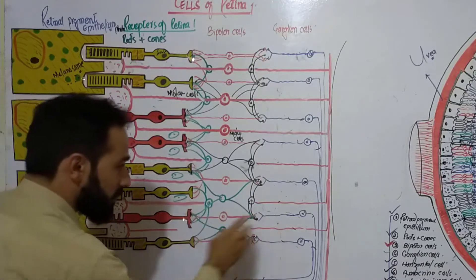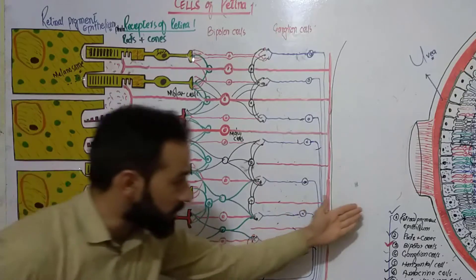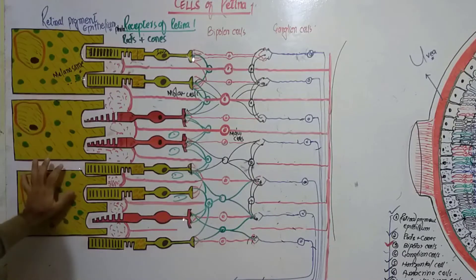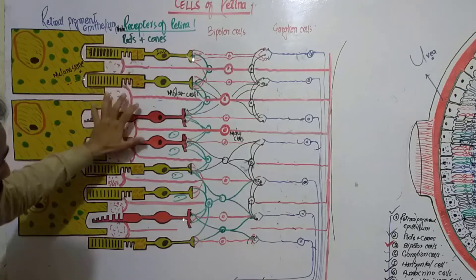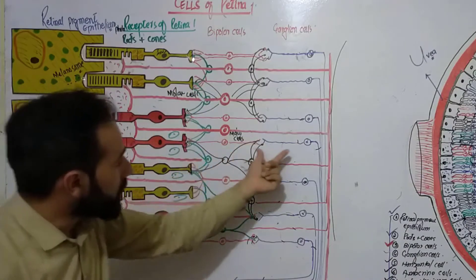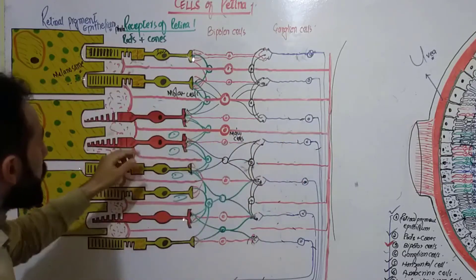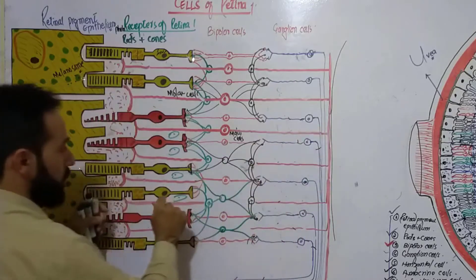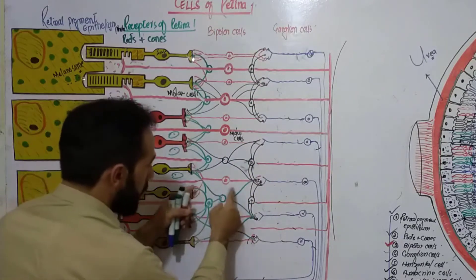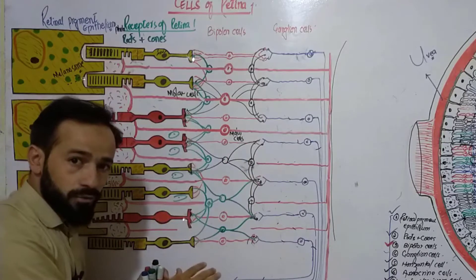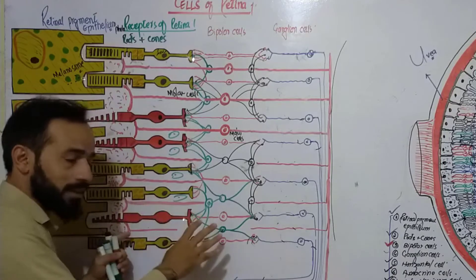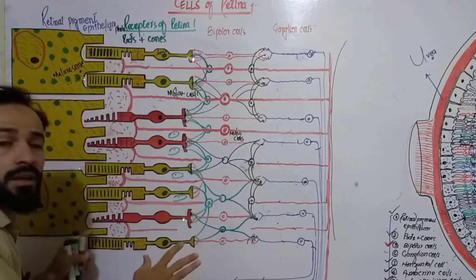As I told you in the previous lecture, we discussed about cells — how many types of cells are present. There are 10 types of cells found in the retina: the retinal pigment epithelium, rods and cones, bipolar cells, ganglion cells, Müller cells, horizontal cells, amacrine cells, and interplexiform cells. If you haven't watched that lecture, I will give the link in the description.